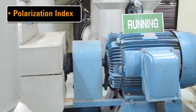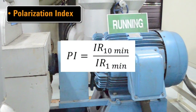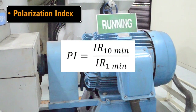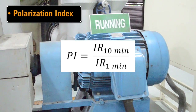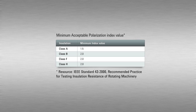The polarization index test is the ratio of the motor winding insulation resistance value obtained at 10 minutes test time over the value obtained at 1 minute test time. Good insulation shows a continuous increase of resistance over a period of time. Therefore, the polarization index of good insulation is normally more than 2, depending on the insulation material class.